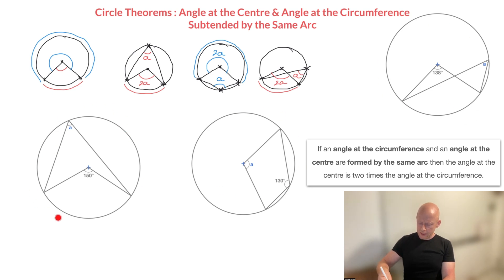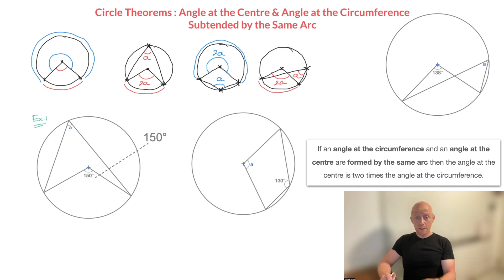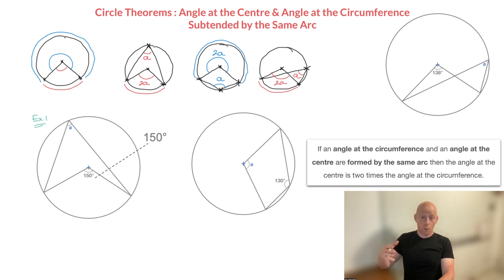The first example is the one we have down here — I'll label it example one. Looking at this, we can see that we're given a circle and we need to find this angle A at its circumference. For that, we're given an angle at the center of the circle which is 150 degrees. This scenario — angle at the circumference and angle at the center — suggests we should be using the theorem we just learned about.